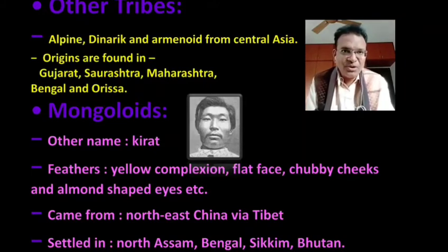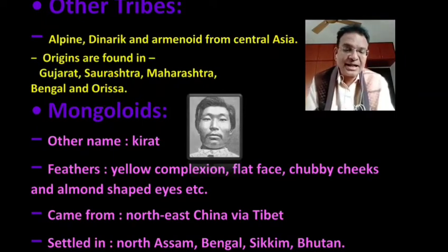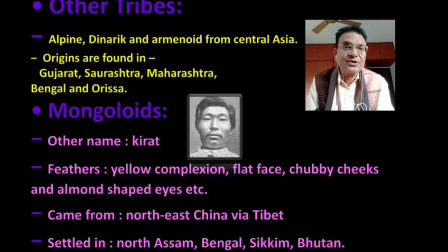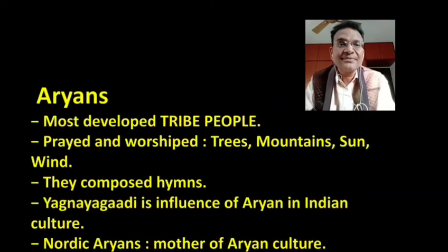So all these are the characteristics of Mongoloid people: yellow complexion, flat face, chubby cheeks, almond shaped eyes. And because of the yellow complexion, Mongoloid people were known as Kirat. Thereafter, the most developed tribe was the Aryan people.